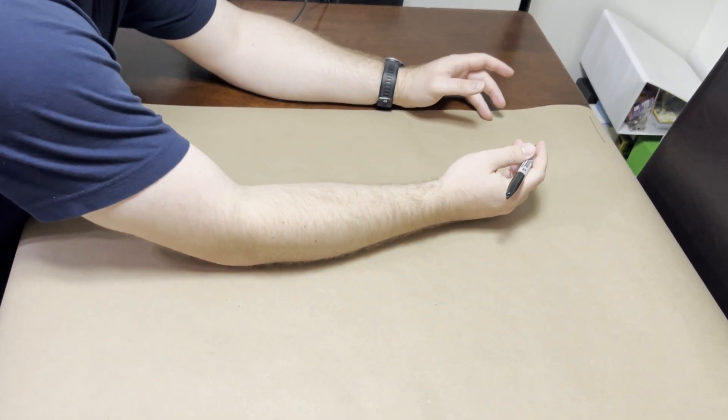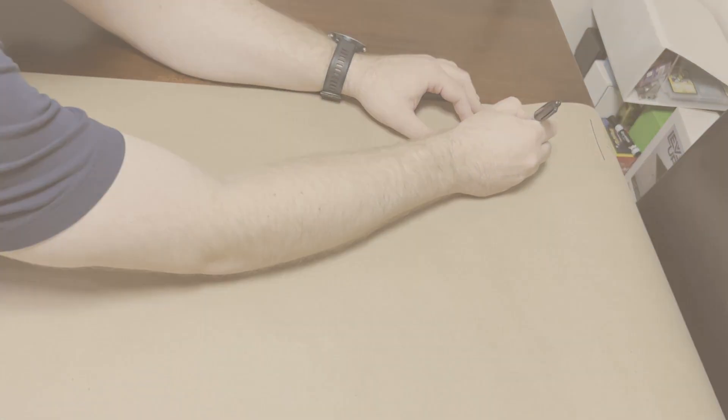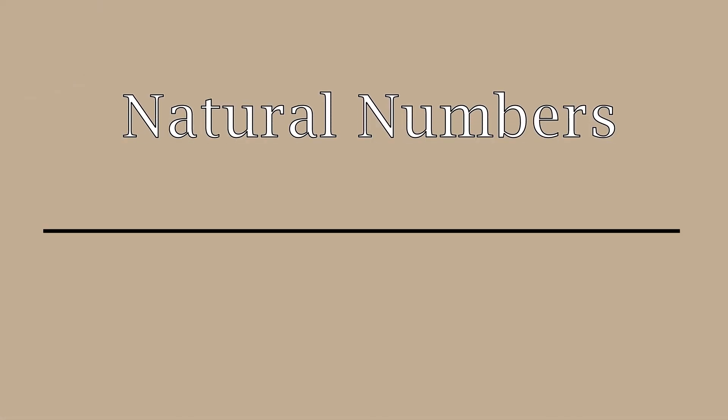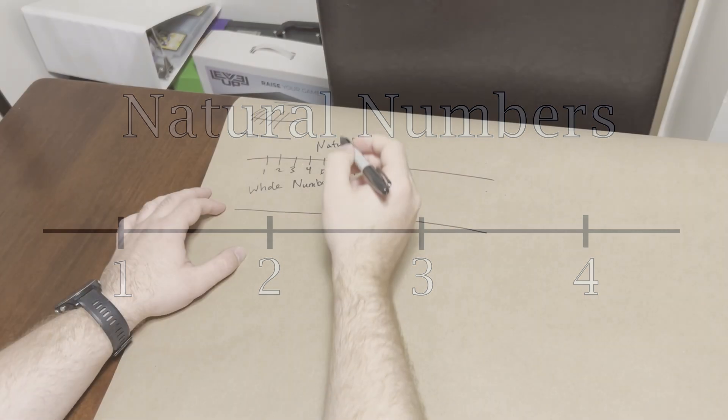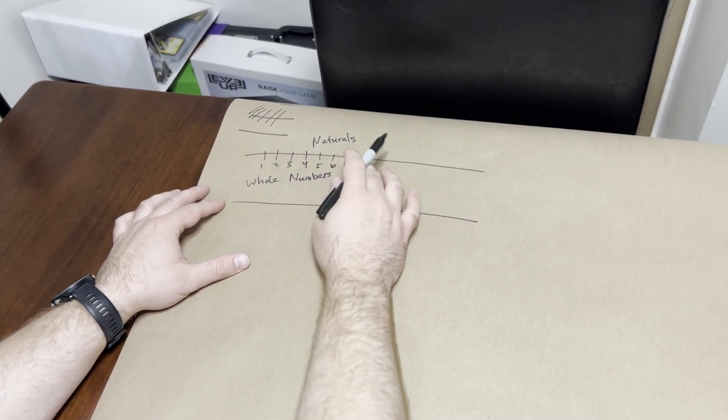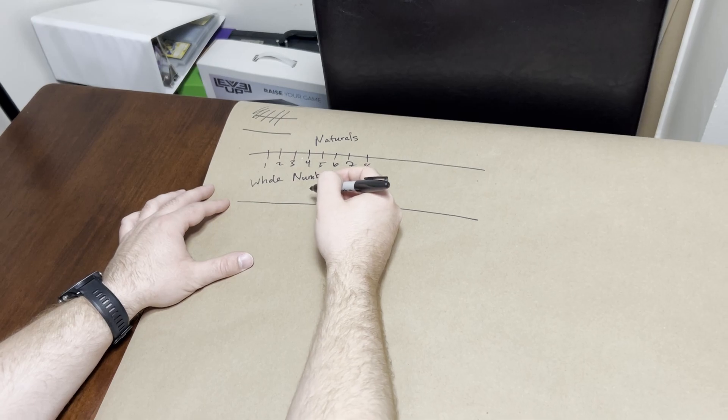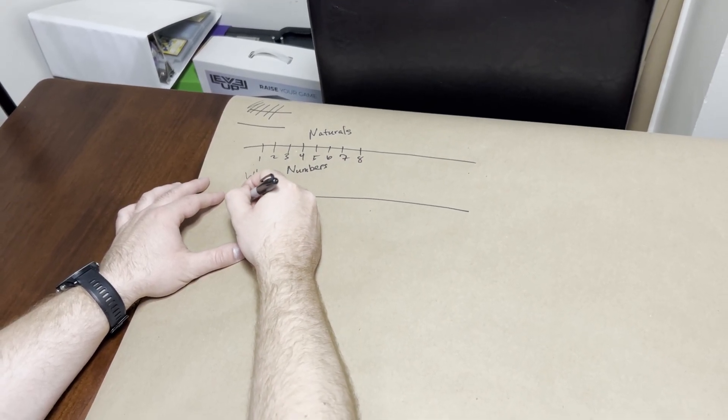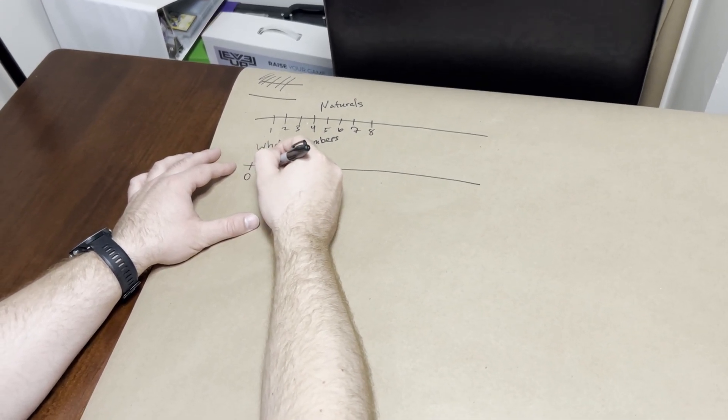The first type of numbers we ever learned about were the naturals. Naturals were important because these are how we were able to count. They're all classics: one, two, three, four. These are pretty important numbers. I like me a good seven. These were important until we realized we could use zero. That's basically the only difference between naturals and the whole numbers. The rest is the same.